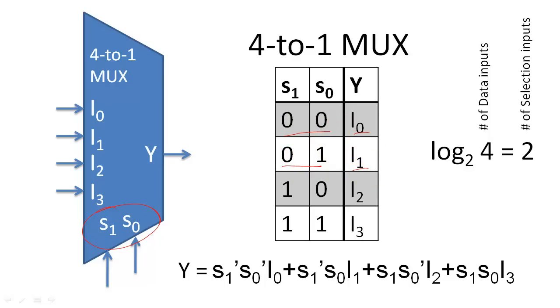For example, when the selection inputs are set to 2, the output is set to the value of I2.